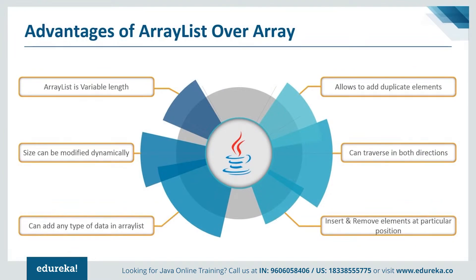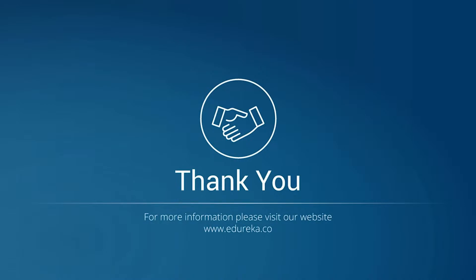Now let's jump into the last topic — advantages of ArrayList over arrays. First, ArrayList is variable length: arrays are fixed length and cannot be changed once created, but ArrayList can grow and shrink dynamically. Second, the size can be modified dynamically — when you add elements the size increases, and when you remove elements it decreases. Third, you can add any type of data, and it also allows duplicate elements. Fourth, you can traverse an ArrayList in both directions — forward and backward — using a ListIterator, and it allows you to insert and remove elements at a particular position. I hope you understood the concept of ArrayList and the difference between array and ArrayList. That's all for the session, thank you and have a nice day.